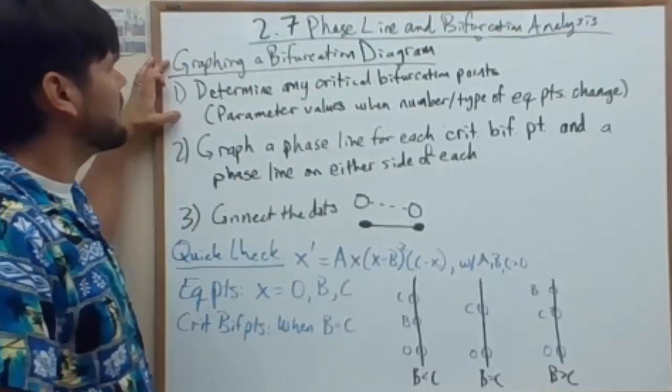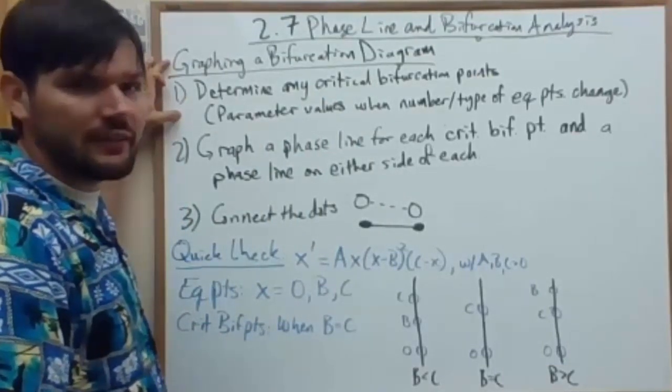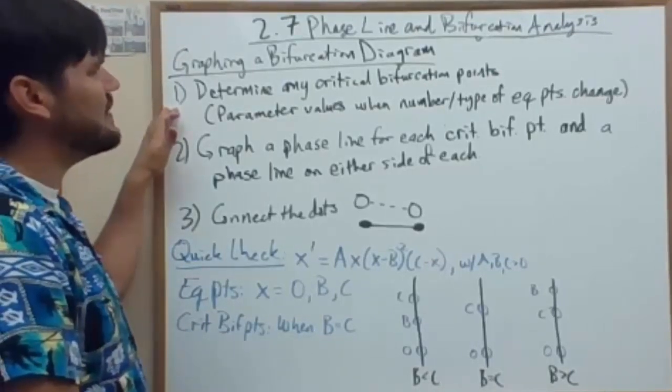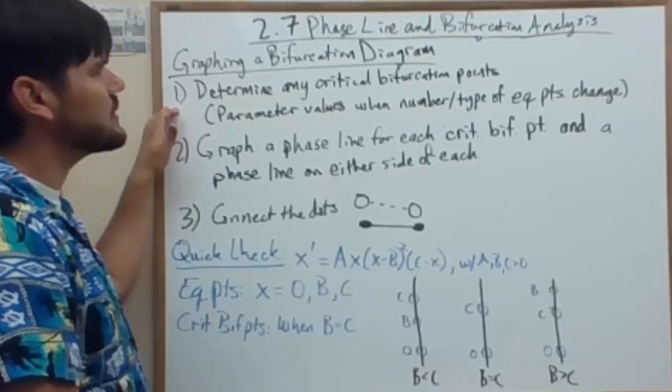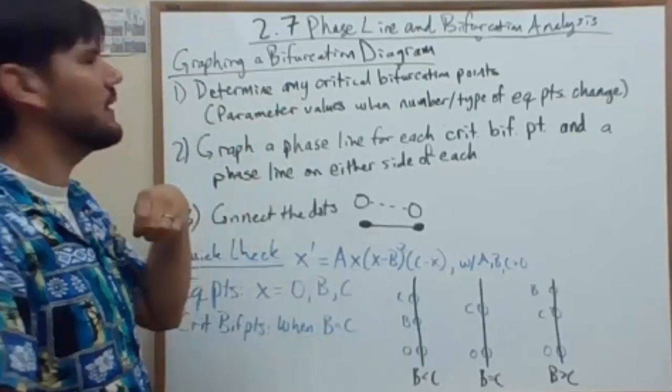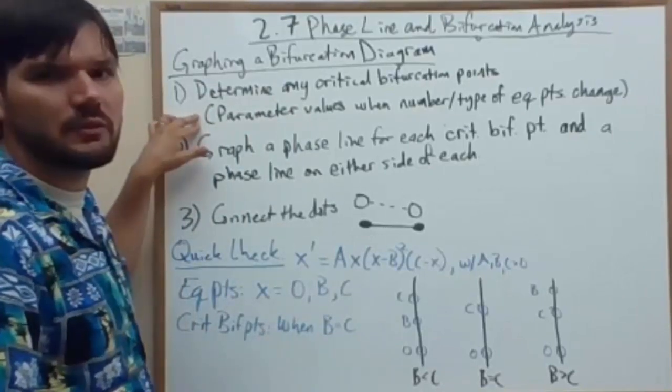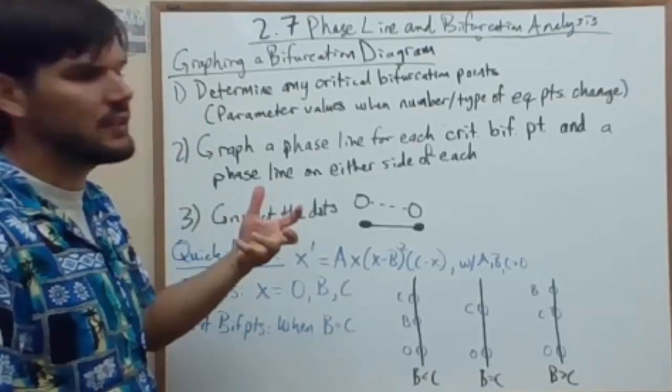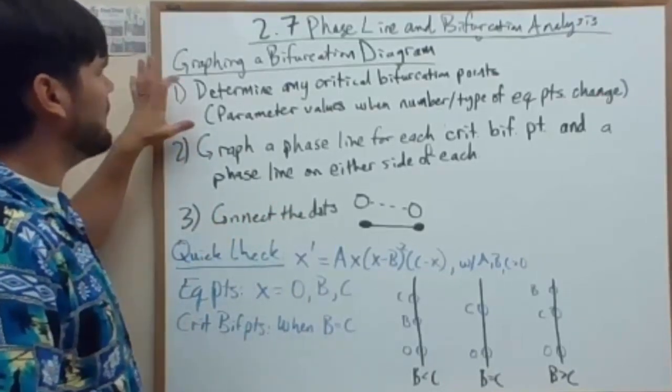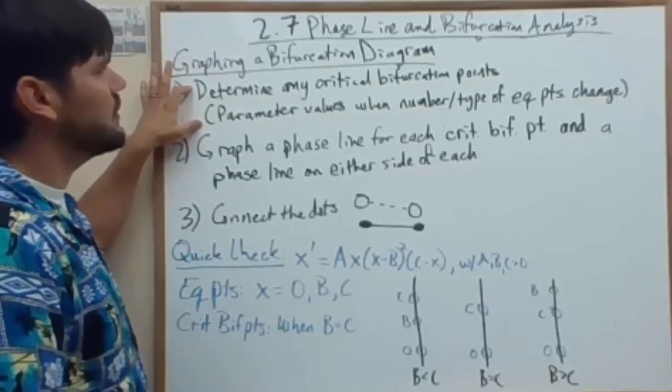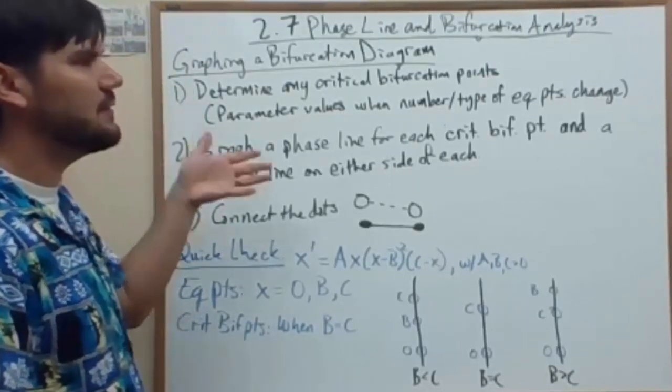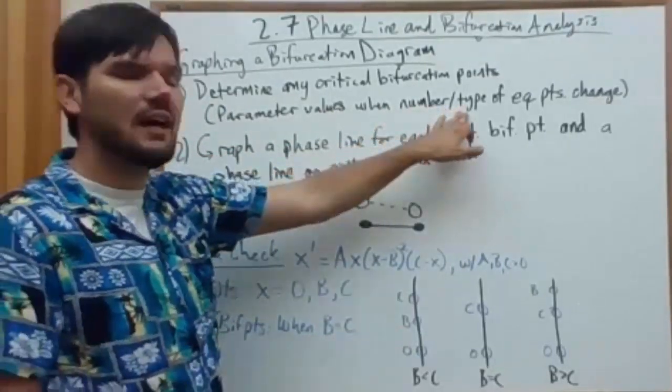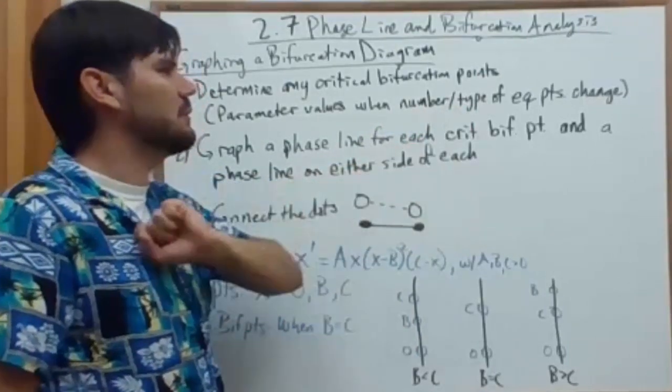Let's first go over the steps for graphing a bifurcation diagram. Well first, you determine any critical bifurcation points from the equilibrium points you've already found. So if you haven't done the equilibrium phase line analysis yet, do that. Find the equilibrium points, test the sign chart, that kind of thing. So having the equilibrium points, then you determine which parameter values will change the number of equilibrium points or the type behavior of those equilibrium points.